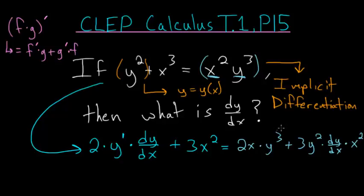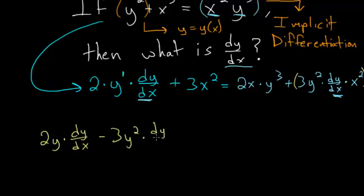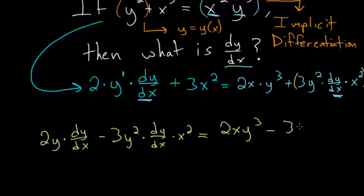Now that we've taken the derivative on each side, we need to solve the equation for dy/dx. Let's subtract the relevant term from each side so that all the dy/dx terms are on one side. We can rewrite this as 2y times dy over dx minus 3y squared times dy over dx times x squared, which equals 2xy cubed minus 3x squared.